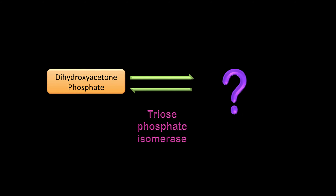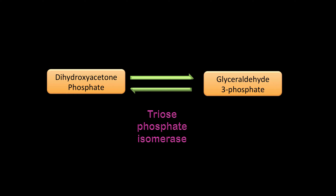Continuing: triose phosphate isomerase is converting DHAP, which is dihydroxyacetone phosphate, to glyceraldehyde-3-phosphate. So DHAP is converted to glyceraldehyde-3-phosphate, and what you end up with is two molecules of glyceraldehyde-3-phosphate entering the second phase — the energy generation phase of glycolysis.